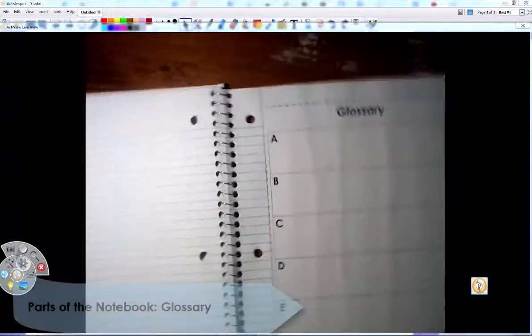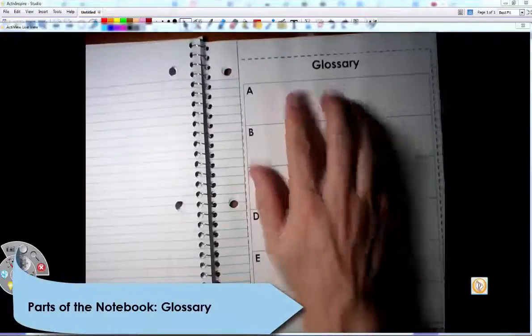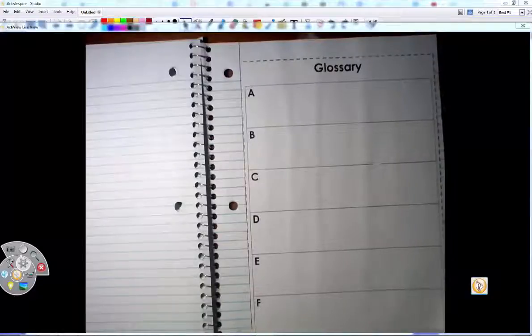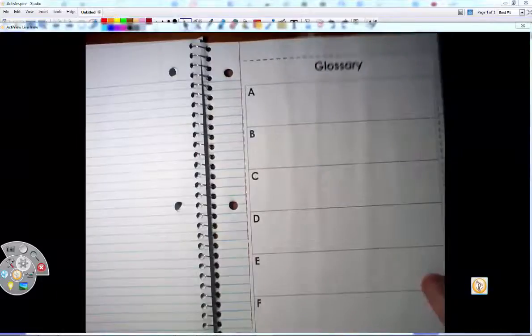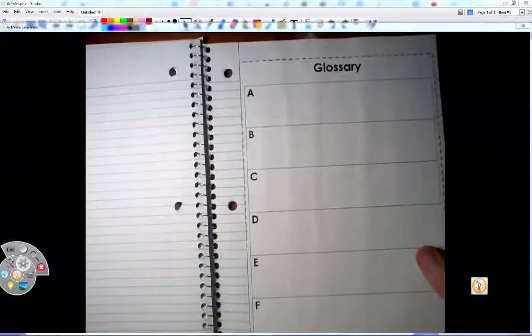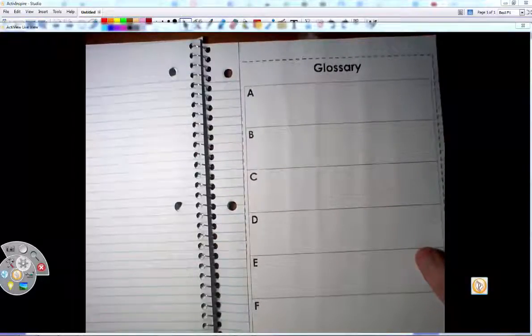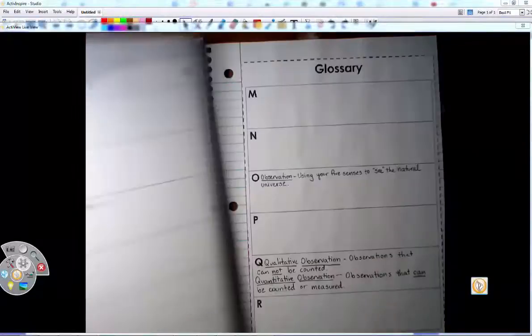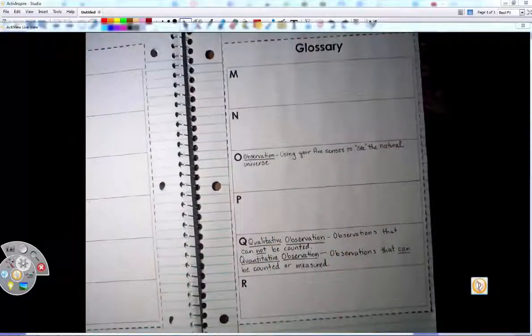One last thing before we go is here at the end. At the end, you have a glossary. I had you cut out these pages and paste them. They're on the last four pages. And whenever we run out of pages in our science notebook, we'll go ahead and create a new one with this. But the glossary are all the terms you've learned so far in class. So all these vocabulary words that we talked about in the videos and things like that go on here. If you notice, I already have inference, and then right here I have observation, qualitative and quantitative observation. This is from our lesson.